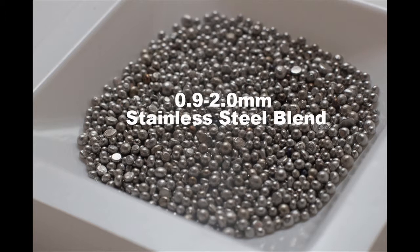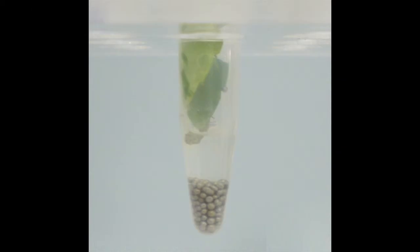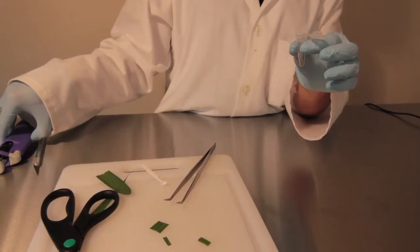Stainless steel beads cut through fibrous tissue, and their density helps to prevent the sample from flying up and sticking to the sides of the tube. Add a volume of beads equal to or greater than your sample.